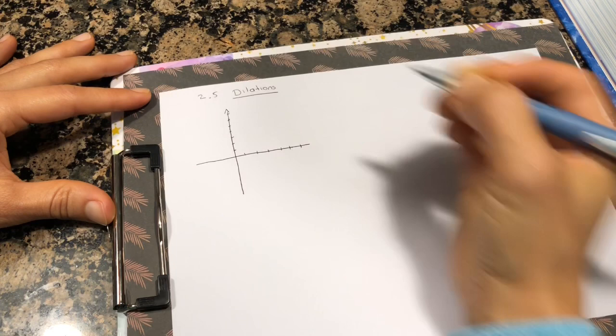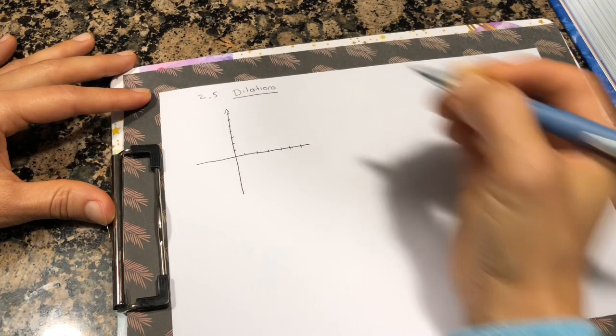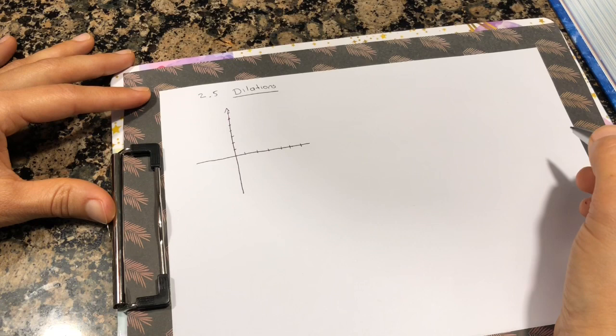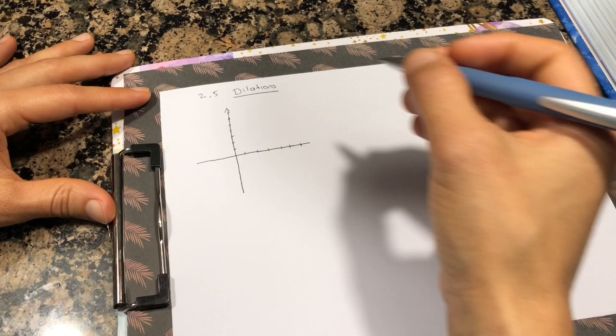Now, different than congruent figures that we saw yesterday, the angles remain the same in the dilation, but not the sides. You will see.